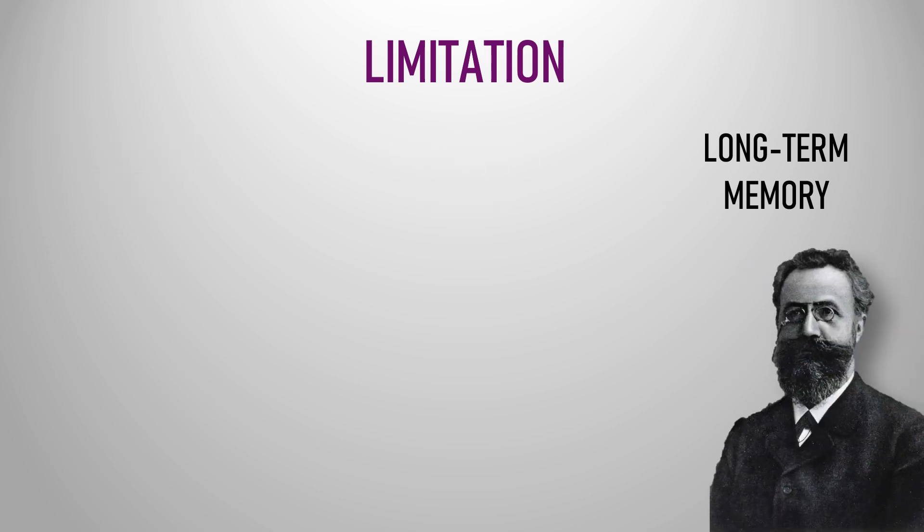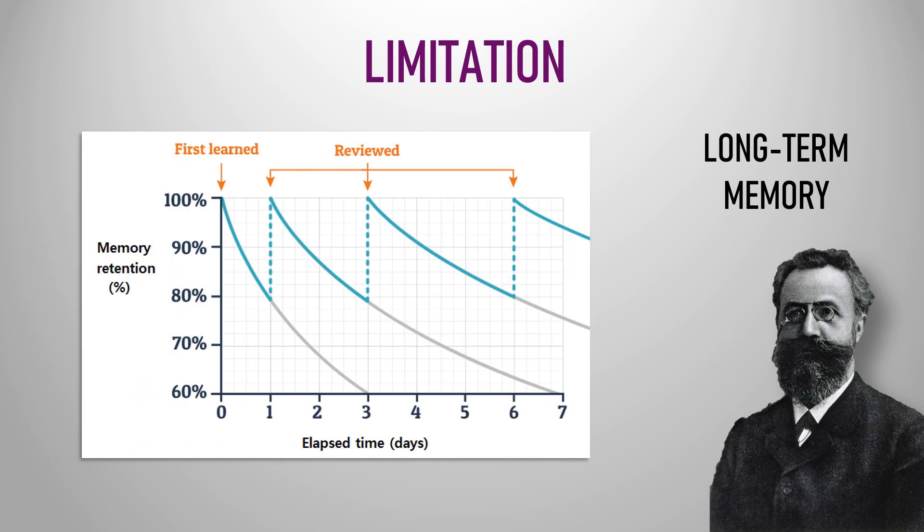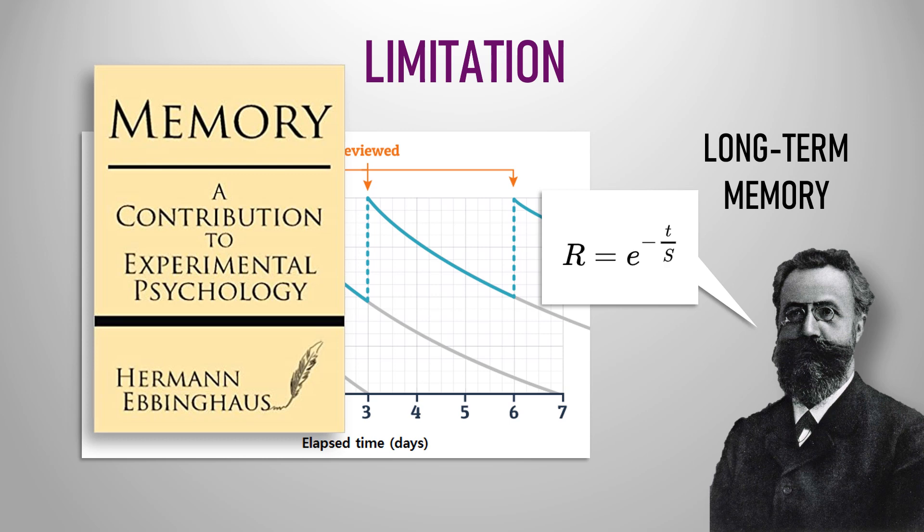This research started with the German psychologist Hermann Ebbinghaus, who explained what he called the Forgetting Curve, in which you can see that with repetition, memory is able to retain information for longer. He even developed a formula to calculate it, which is really similar to the one for the reliability of a machine.